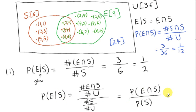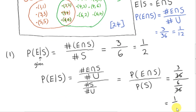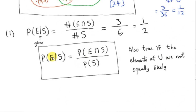Let's run through this calculation. The probability of E intersecting S is 3 over 36, and the probability of S is 6 over 36. Multiplying above and below by 36, we get 3 sixths, which is one half. This formula holds when the elements of the universal set are equally likely, and it is also true when the elements are not equally likely.